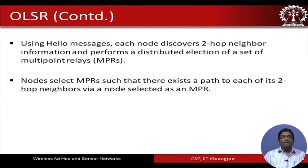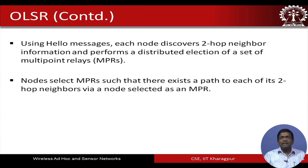OLSR uses a hello message where each node discovers its two-hop neighbor information and performs a distributed election of a set of multipoint relays. The MPRs can be selected as two-hop neighbors — nodes select MPRs such that there exists a path to each of the two-hop neighbors of a particular node via a node that is selected as an MPR.